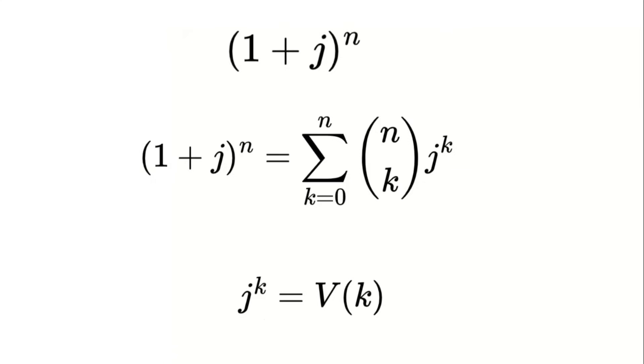Also the binomial coefficients or the values we get from n choose k behave differently depending on whether they are odd or even. To simplify 1 plus j raised to n we need to determine when the binomial coefficient n choose k is odd or even.